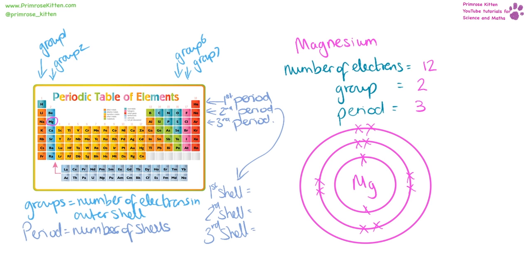From the periods, we know that the first shell can hold a maximum of two electrons, the second shell can hold a maximum of eight electrons, the third shell can hold a maximum of eight electrons, and you only need to go up to calcium for your GCSE.